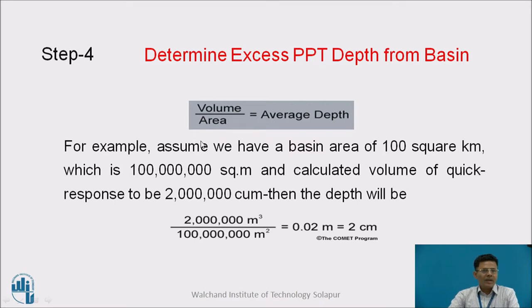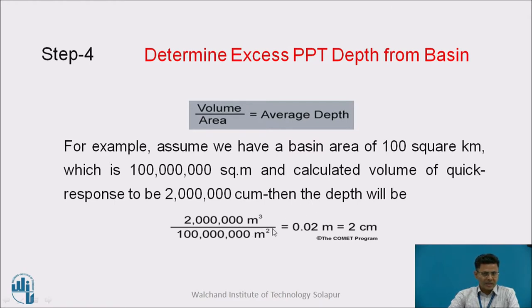For example, assume we have a basin area of 100 square kilometers, which equals so many square meters, and a calculated volume of quick response runoff of 2 × 10⁶ cubic meters. Then the depth equals volume divided by area, which gives 0.02 meters, that is 2 centimeters.